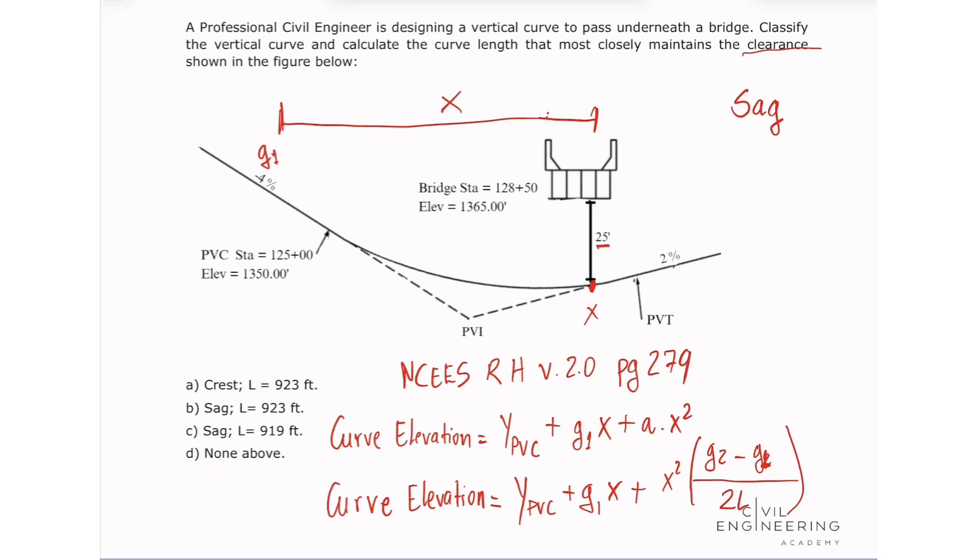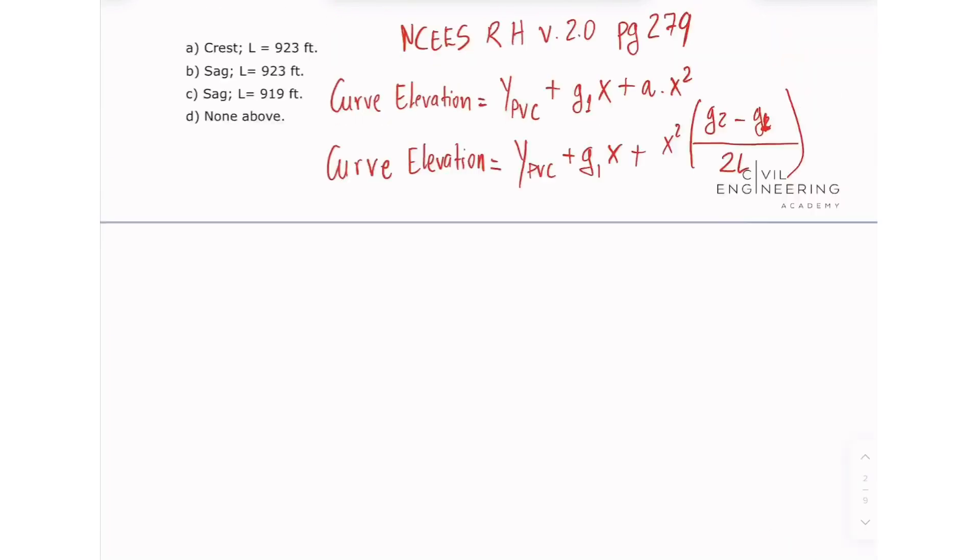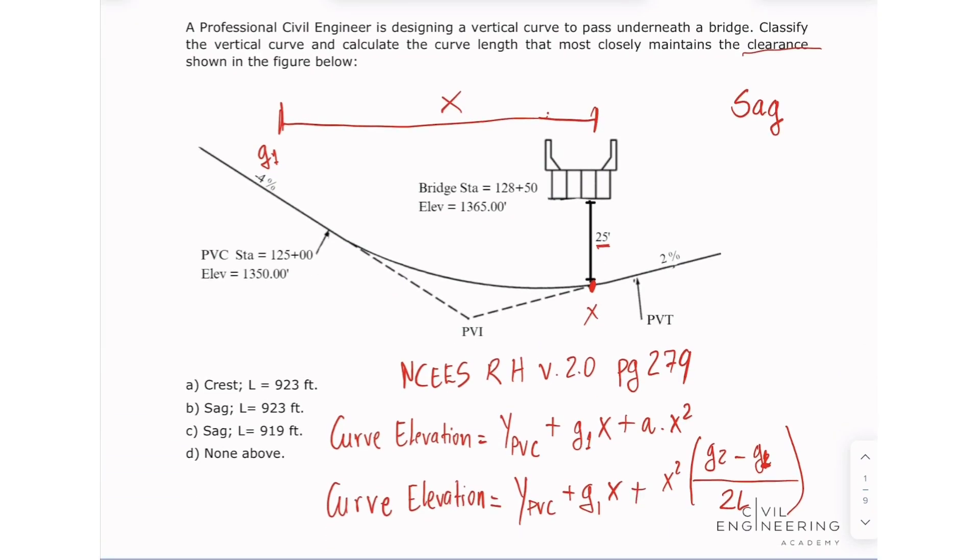And we are looking to find the L, which is our length. So let's make some calculations here. We're going to need to use the station of the bridge to calculate the horizontal distance x from the PVC to the bridge. So we know the station for the bridge and we know the station of our PVC. So the difference between these two stations will give us the X value.